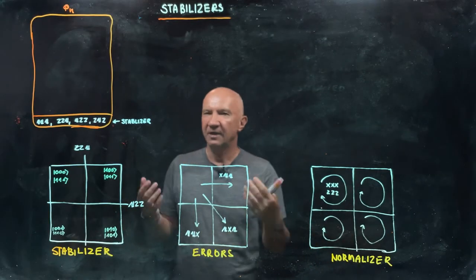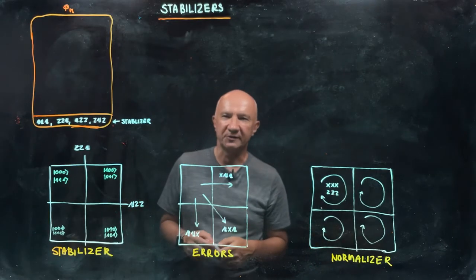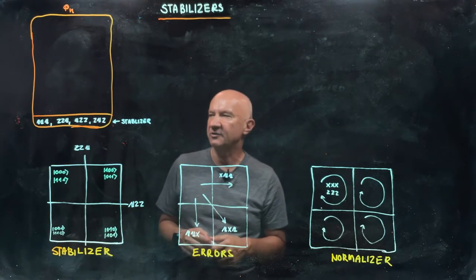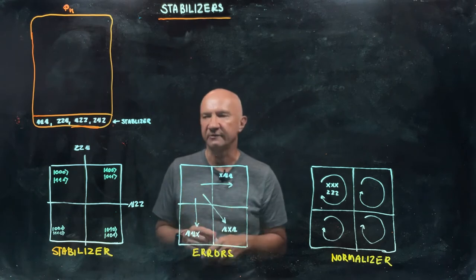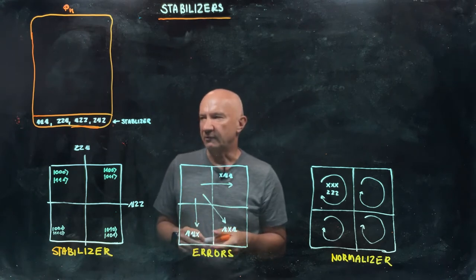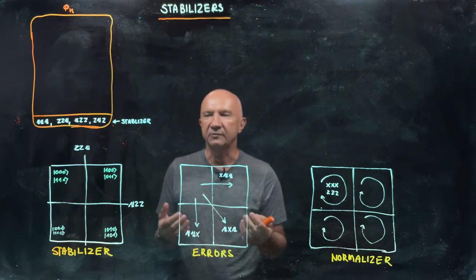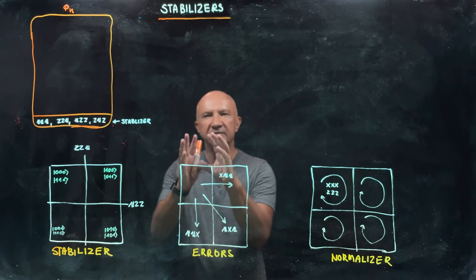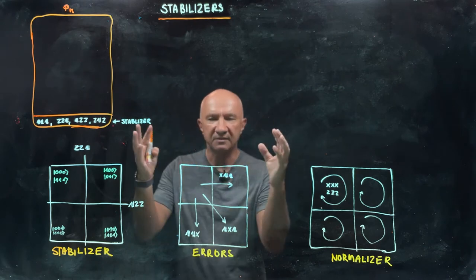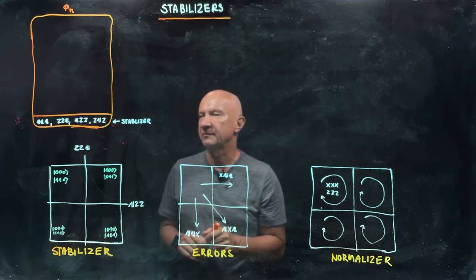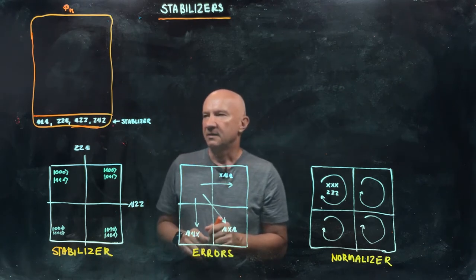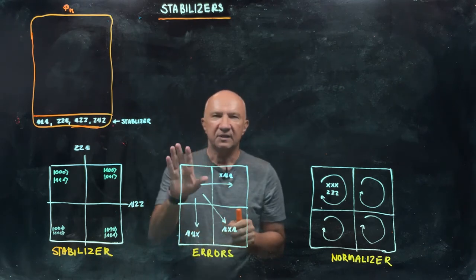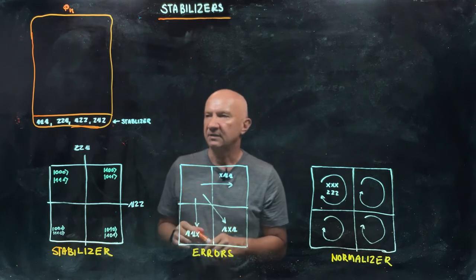Let's talk about Pauli operators and how the algebraic structure of Pauli operators helps us to design good quantum error correcting codes — at least one class of codes called stabilizer codes. Let me start with the stabilizer.